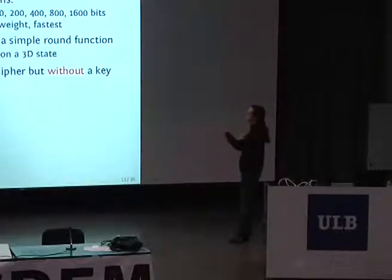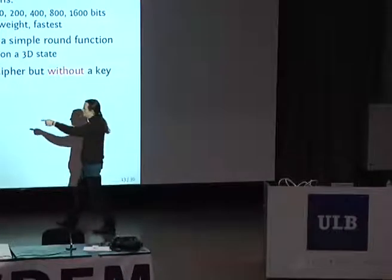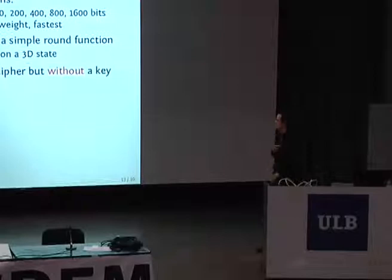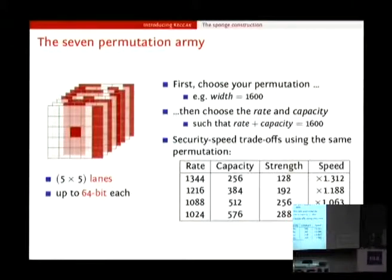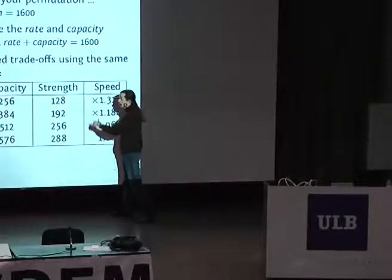So basically, this is a bit like a block cipher, but you don't have a key. How do you use that? First, you have to choose one of the seven permutations, for instance the biggest one, the 1,600. And then you have to choose the value of the rate and the capacity. The requirement is that the rate plus the capacity needs to equal 1,600, the width of the computation. Depending on your choice, you get a different trade-off of speed and security. For instance, if you choose a capacity of 256, that gives you more or less a security of 128, so you would require up to 2 to the 128 operations to break the hash function.